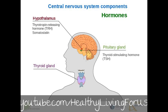The pituitary gland produces thyroid-stimulating hormone, or TSH. It also produces follicle-stimulating hormone, luteinizing hormone, prolactin, and growth hormone. We'll come back to these later.